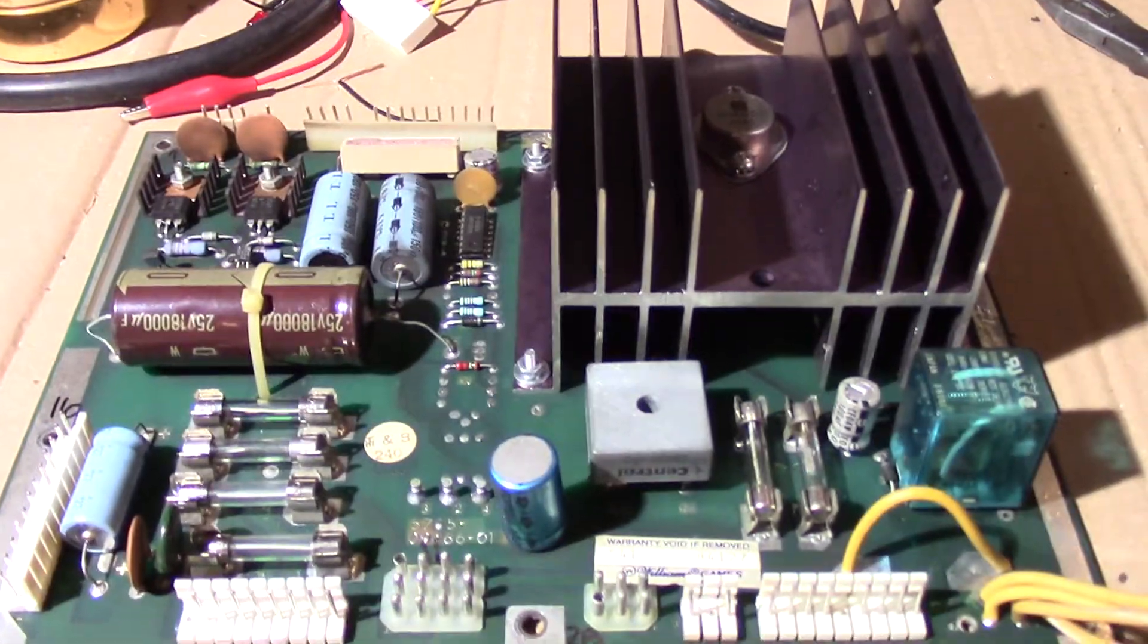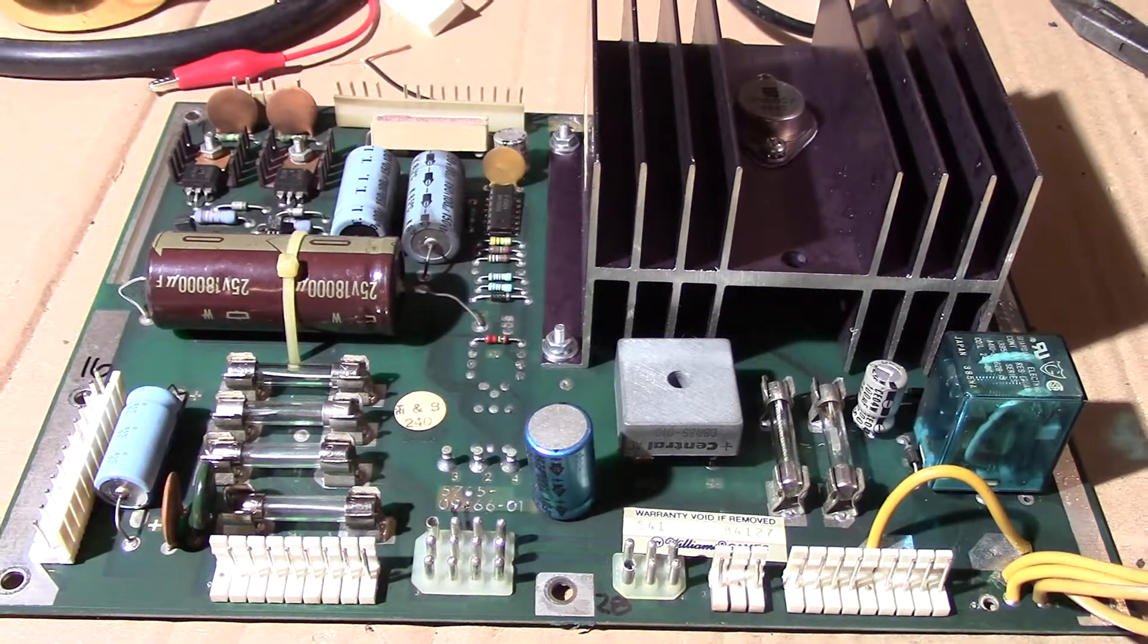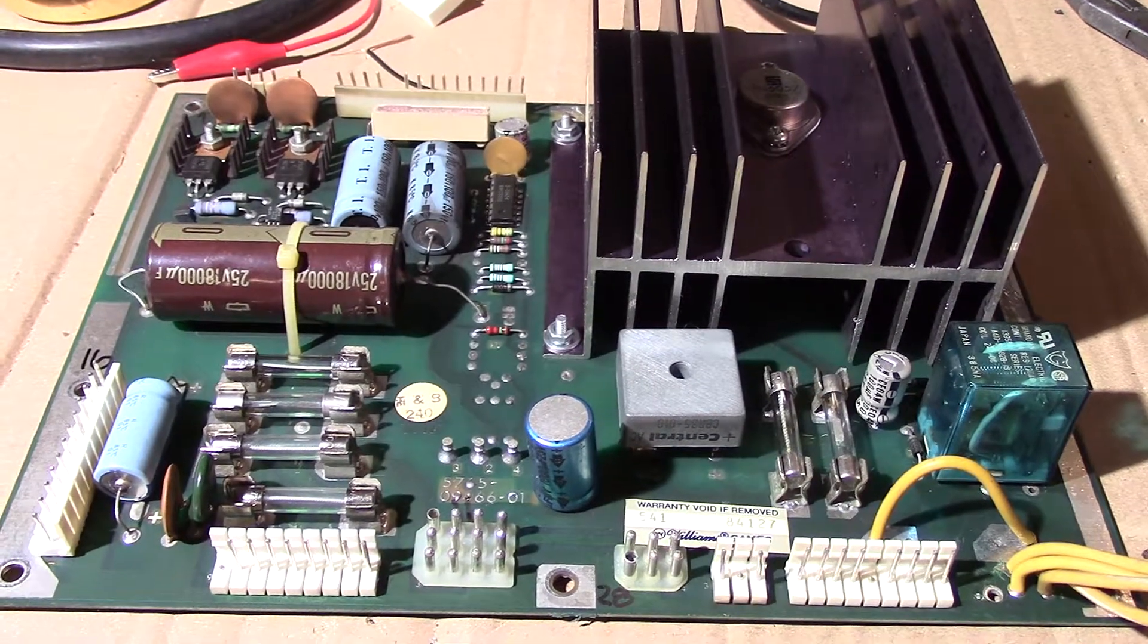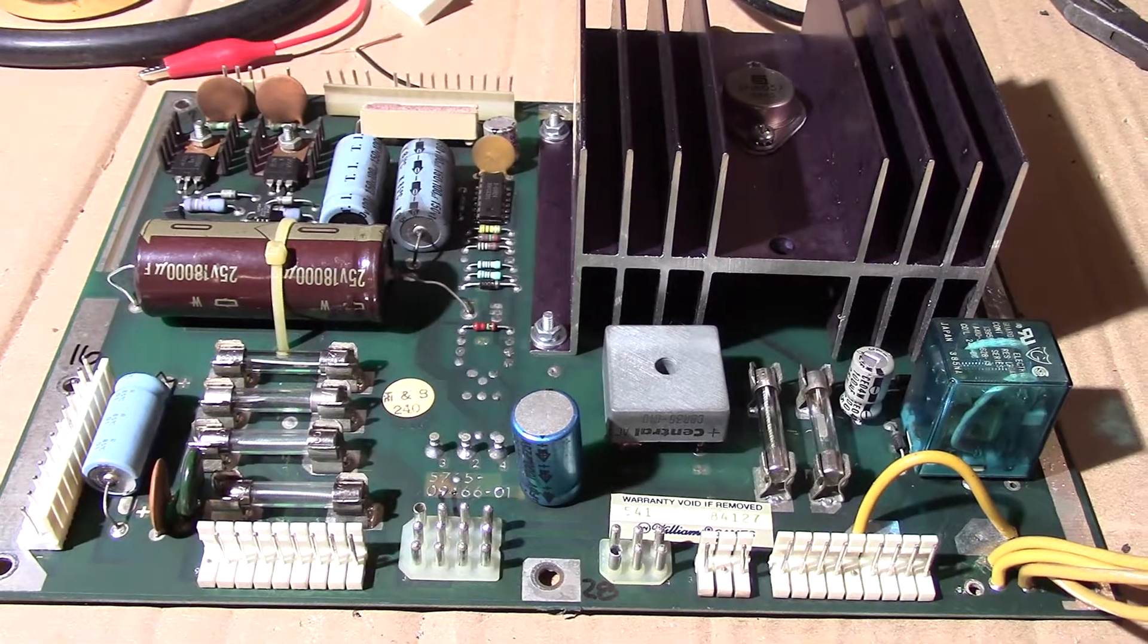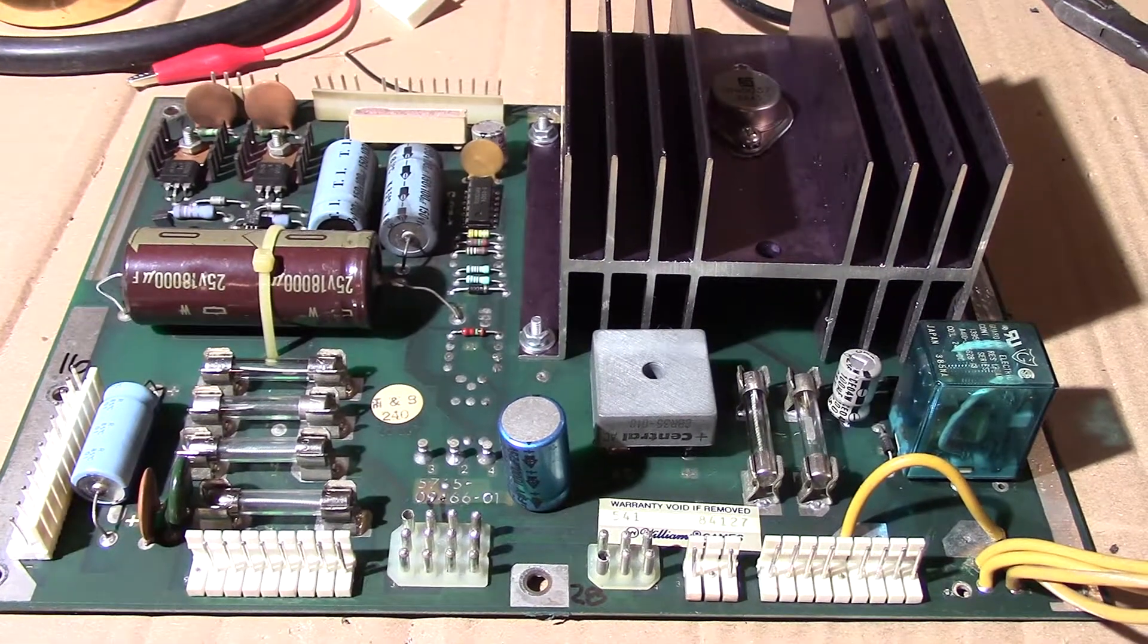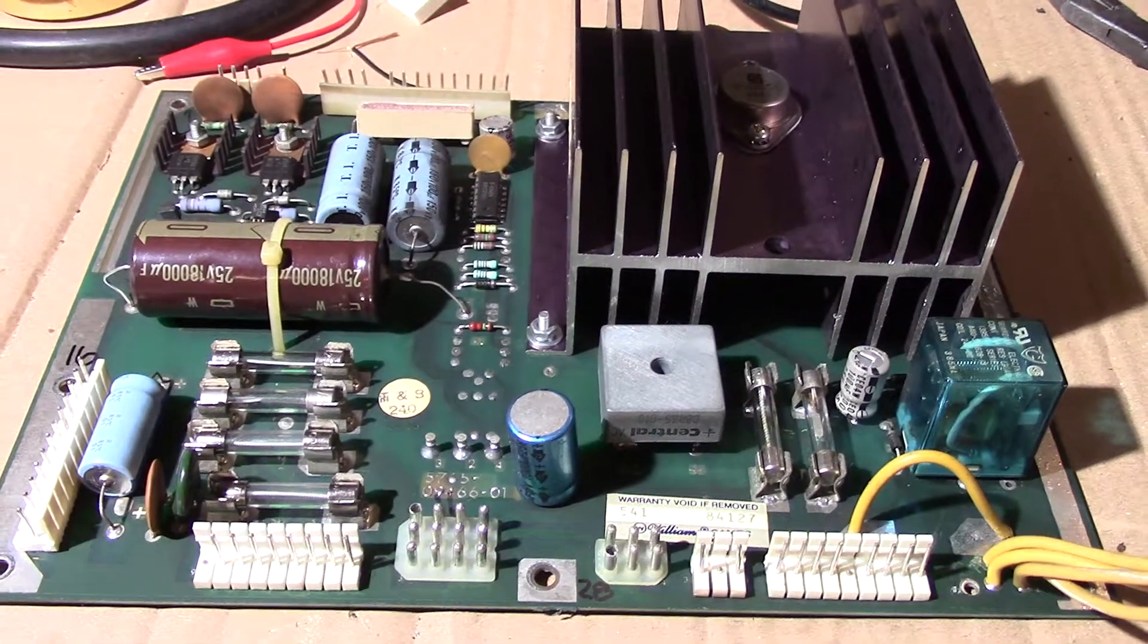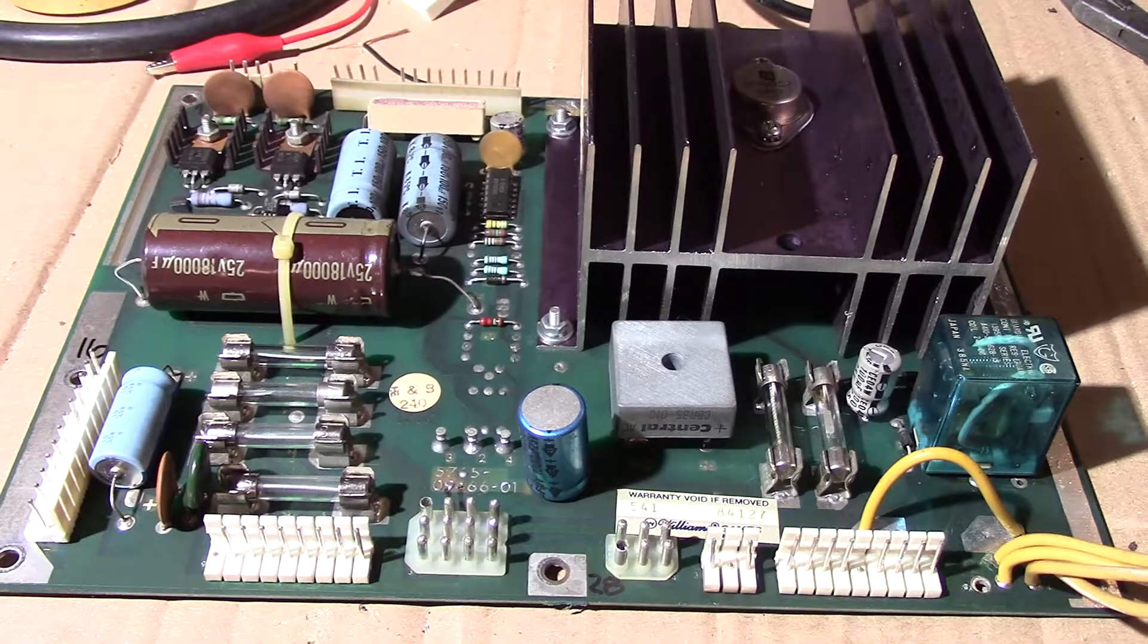But there was one problem with this board, and that is that the special solenoids in Road Kings. There are six of them: four pop bumpers and the two slingshots. They weren't working in game. They actually work in test fine, no problem, but in the actual game when the ball hit any of them they would not work.